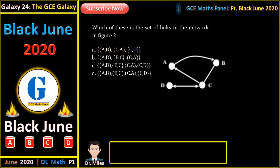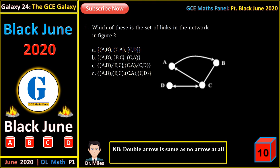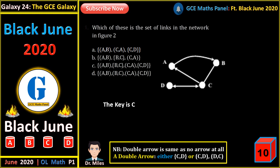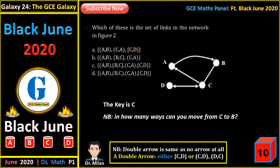Which of these is the set of links in the network in figure 2? Note that this network has directed and undirected lines. A line with a double arrow is the same as a line with no arrow — it means both directions. Both directions are represented either by using braces or using brackets representing ordered pairs CD and DC, but a single brace can represent the two. The only correct option is C. Also, from C to B you can go via A or directly — so there are two ways. But from B to C, there is only one way.